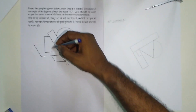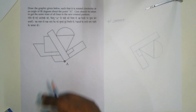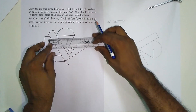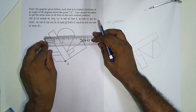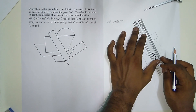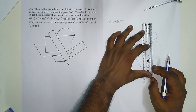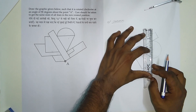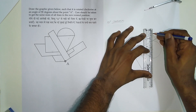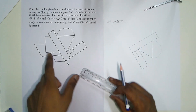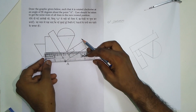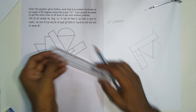Now we have to draw these lines. For that we will take this whole distance from here to here, so this will be 7.5. And this one from here to here is 5.5.